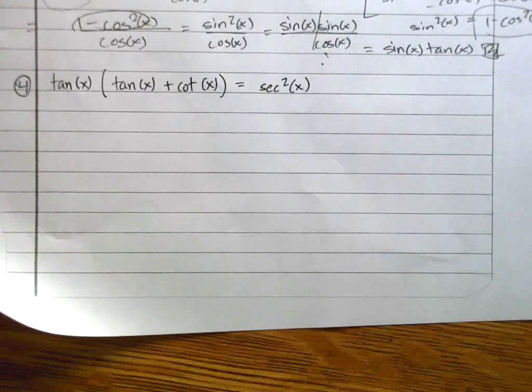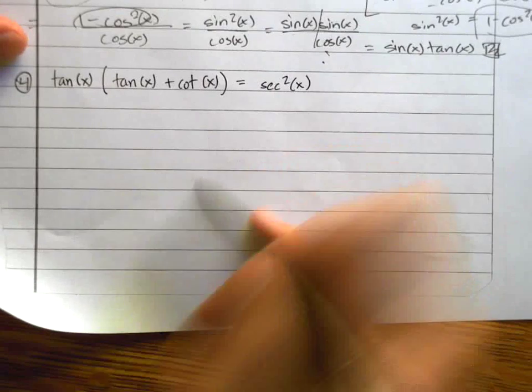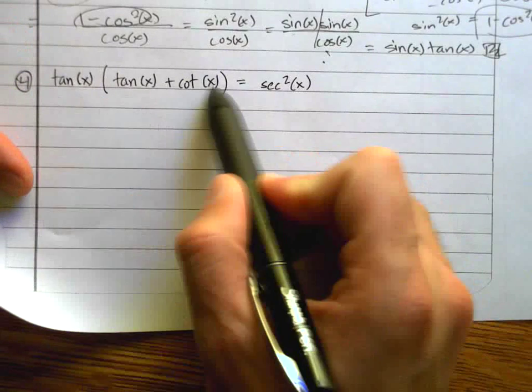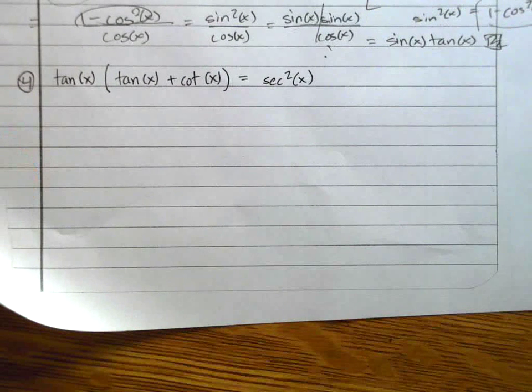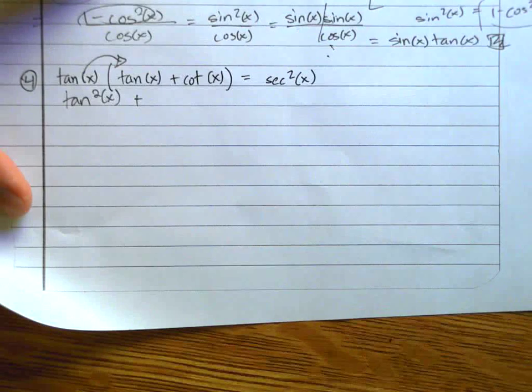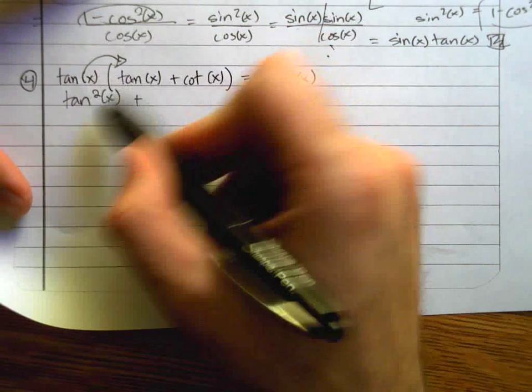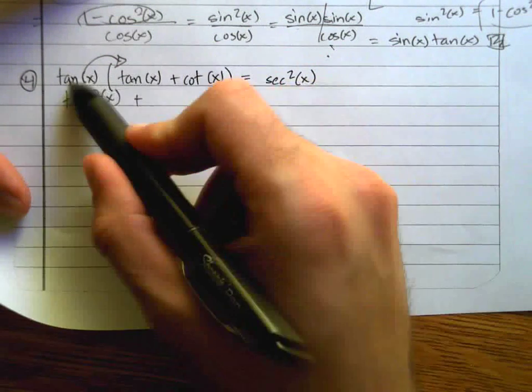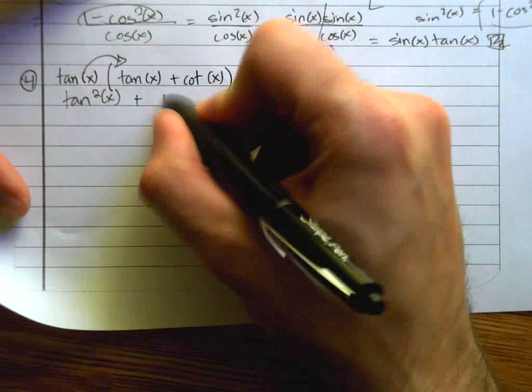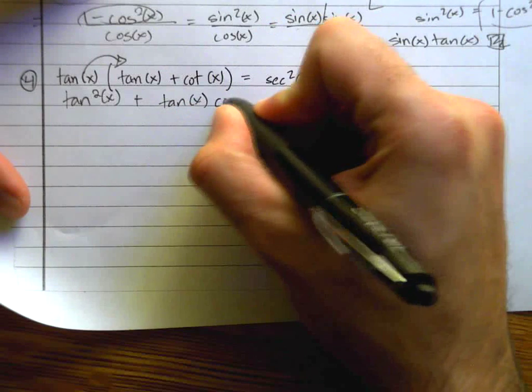Tangent times this stuff. I see stuff times other stuff. I'm going to multiply it out. That's the first thing I'm going to do, so do it. So I multiply tangent times tangent. That's tangent squared. Tangent times cotangent. I'll just write that like that for now.